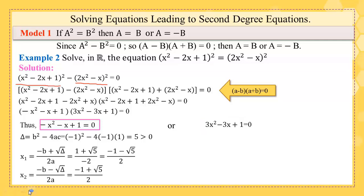Do not forget the second equation. Again ask yourself if a + b + c = 0 or a - b + c = 0 can be applied. If not, go to delta. Here delta = b² - 4ac = -3. Thanks to that, there are no real roots for this equation.